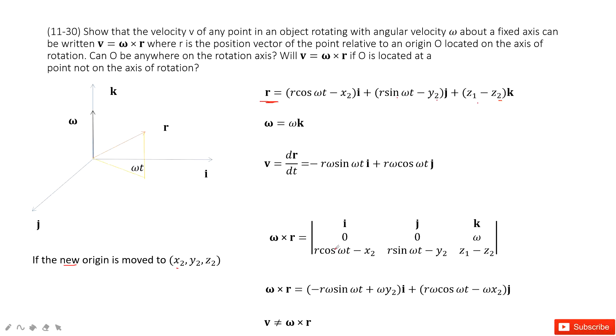And then when we do the cross product, that is ω cross R, we find it changes. So in this case, it will not work. If O is located at a point not on the axis of rotation, this will not equal.